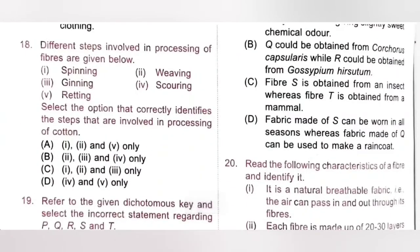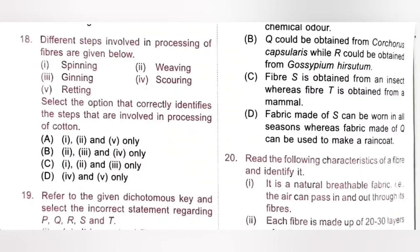Eighteenth question: Steps involved in processing of cotton from the given list are spinning (1), weaving (2), and ginning (3). Option C is the correct answer.